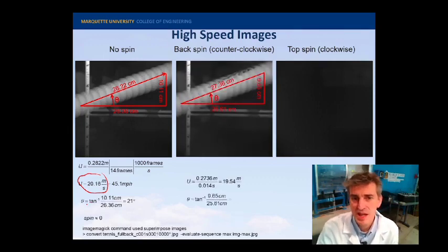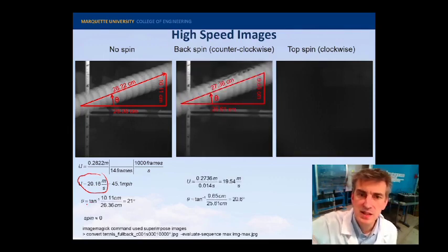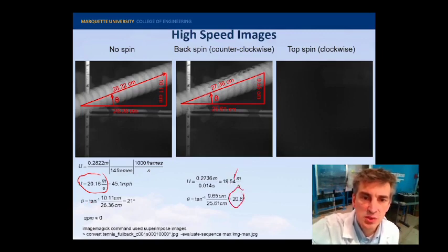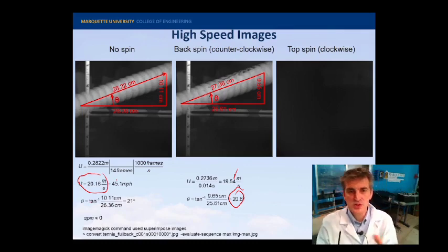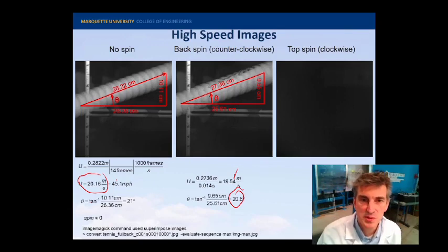I can repeat this for the backspin and get the initial launch velocity and the launch angle, which is pretty close to what it was for the no spin. Remember, this is just the machine firing one ball after the other. So, we're hopefully getting consistent results.